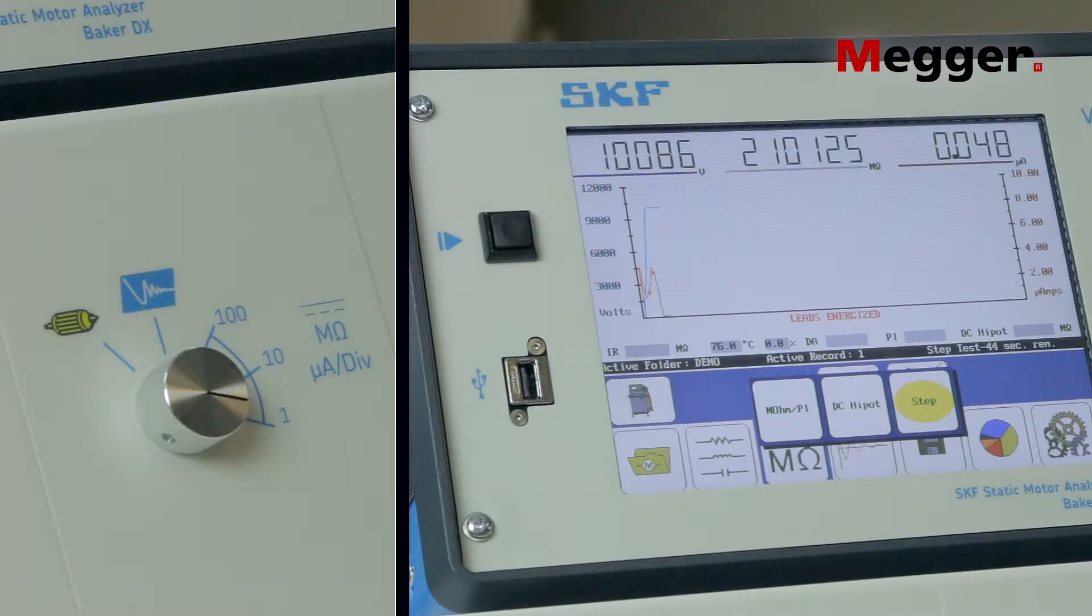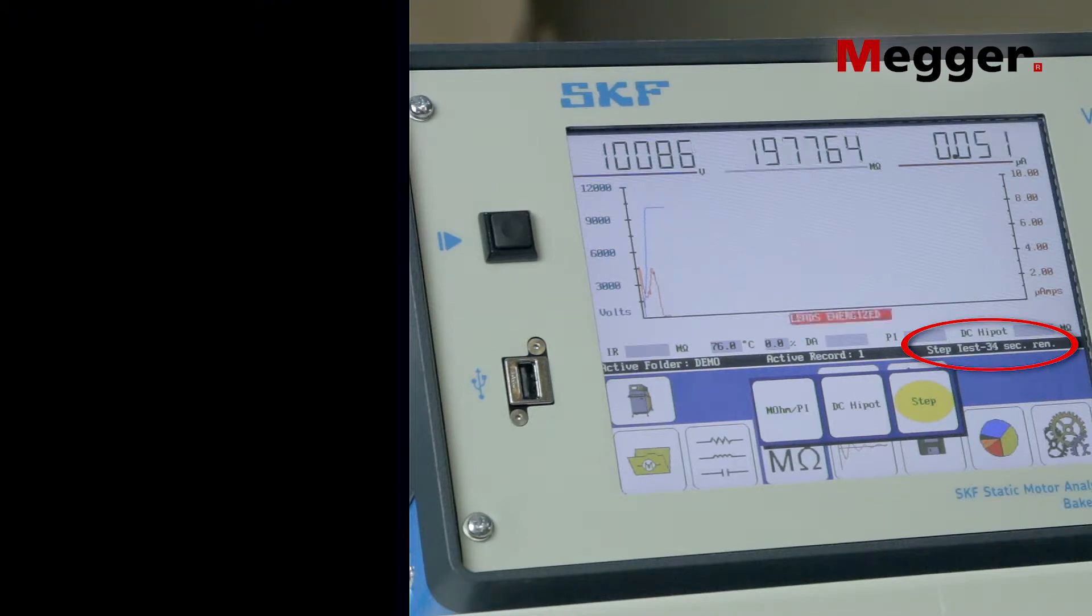The leakage current will continue to diminish, and if it again falls below half of the lowest division, turn the power pack's function knob to 1 microamp per division. Watch the seconds remaining countdown.